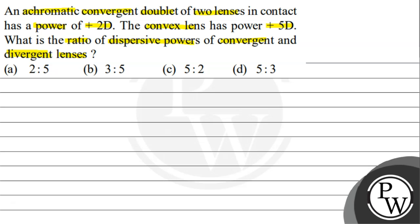The question says we have an achromatic convergent doublet of two lenses, and the combination power is plus 2 diopter. The power of the convex lens is given as plus 5 diopter. We need to find the ratio of dispersive powers — convergent to divergent lens.